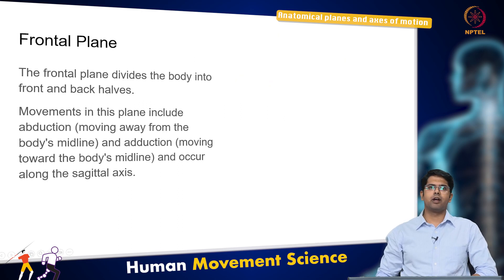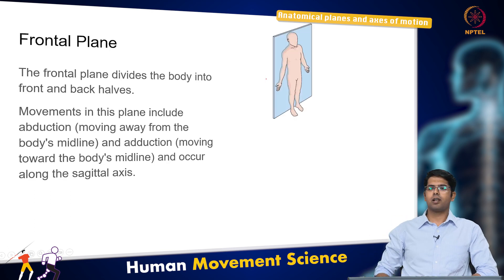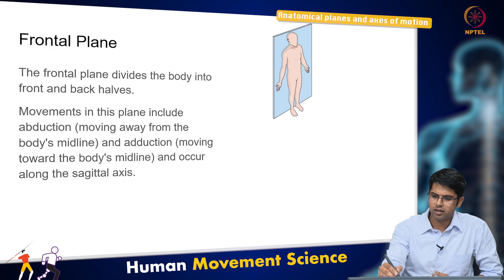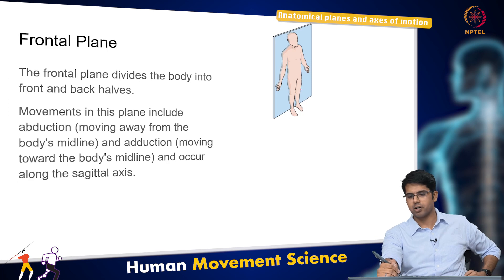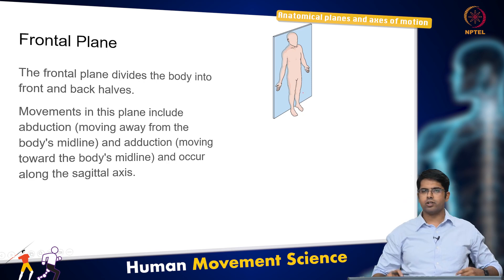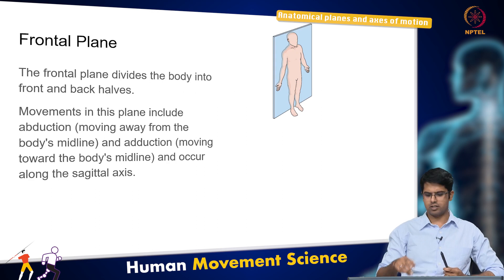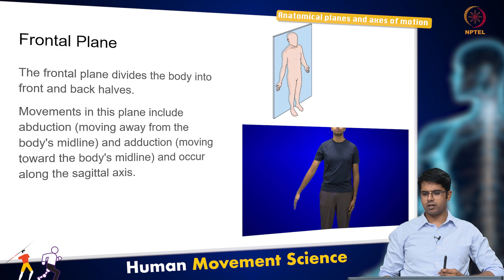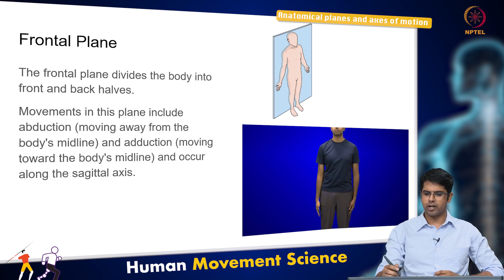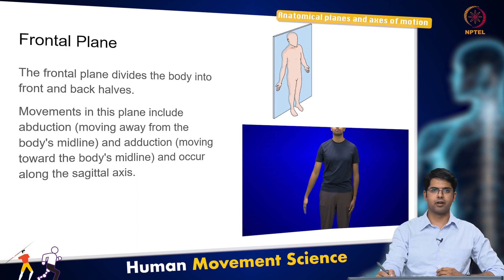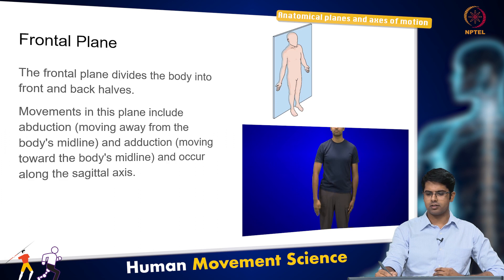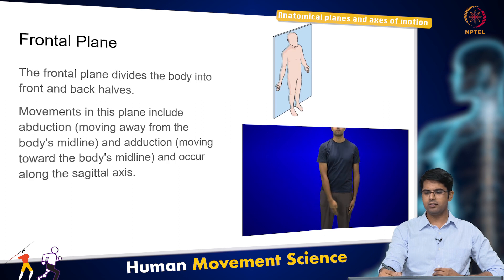The frontal plane divides the body into front and rear halves. There is a plane that goes straight through the middle of the body, dividing it into front and back parts. Movements in this plane usually include adduction and abduction — abduction is moving the segment away from the body, while adduction is bringing it closer to the centerline of the body.